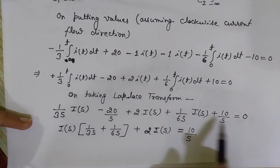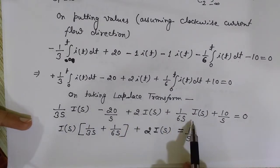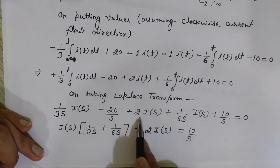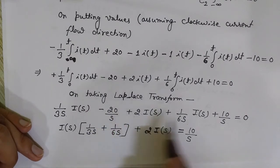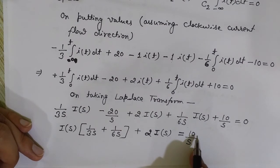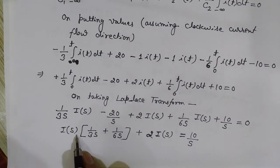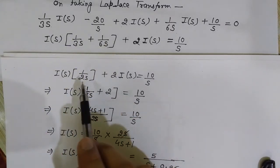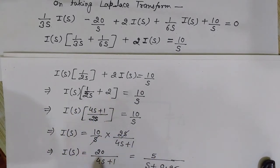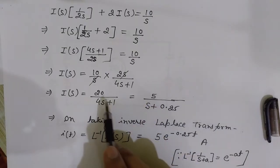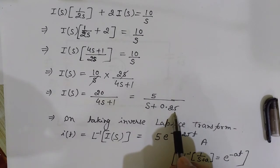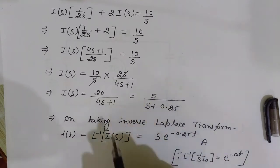Collecting I(s) terms: I(s) × [1/(3s) + 1/(6s) + 2] = 20/s − 10/s = 10/s. The bracket simplifies: 1/(3s) + 1/(6s) = 1/(2s), so I(s) × [1/(2s) + 2] = 10/s. Solving for I(s): I(s) = 10/s ÷ (4s+1)/(2s) = 20/(4s+1). Dividing numerator and denominator by 4 gives I(s) = 5/(s + 0.25).